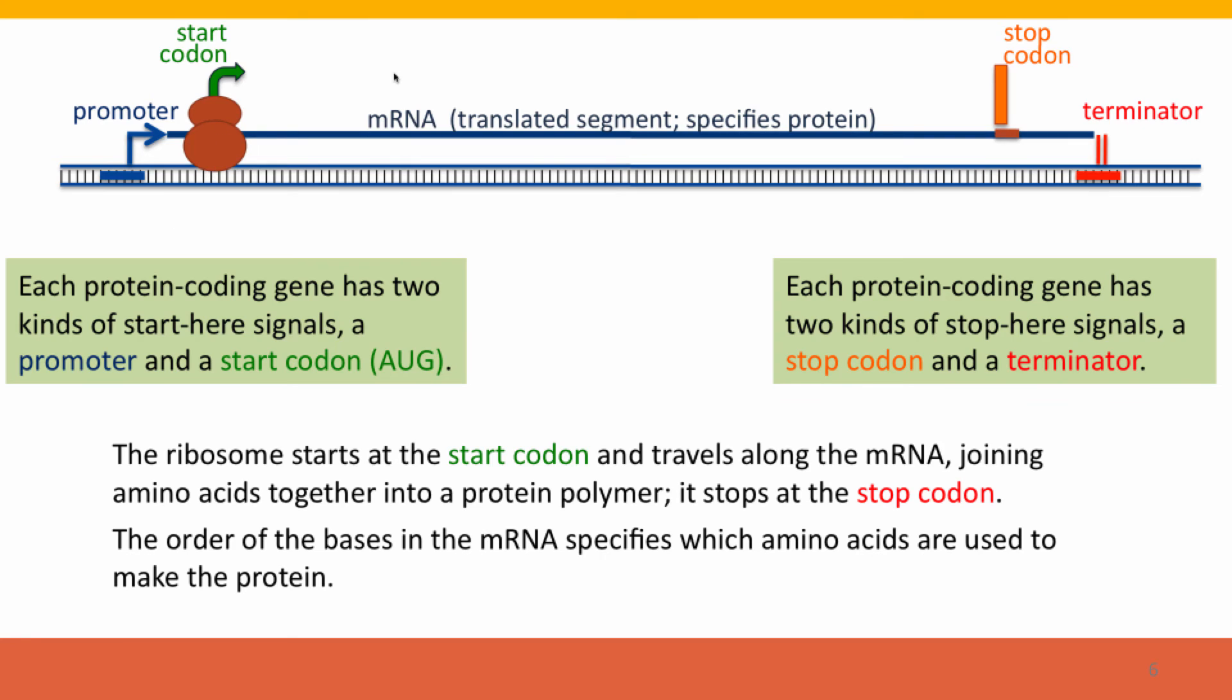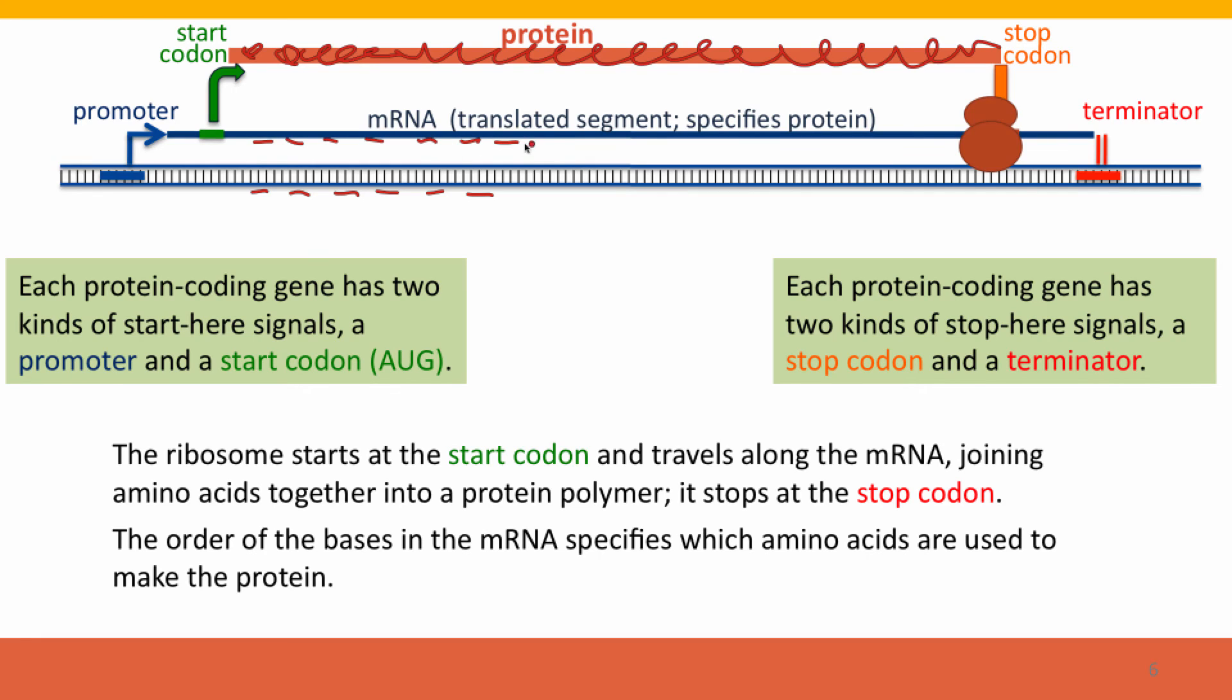So we can make this happen. The ribosome binds to the start codon, it proceeds along the messenger RNA from its five prime end to its three prime end. And as it goes along, it synthesizes amino acids, assembles amino acids into the polymer of a protein, and it stops when it reaches the stop codon. The order of the bases within the DNA determines, of course, the order of the bases in the messenger RNA, and that determines the order of the amino acids in the protein. Talk about this in the next video.